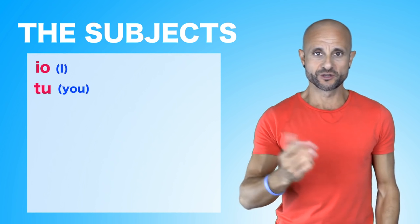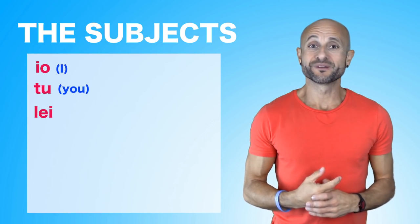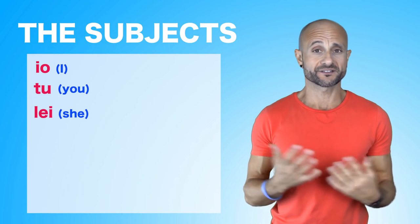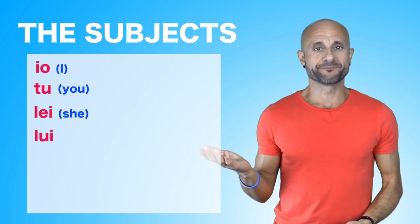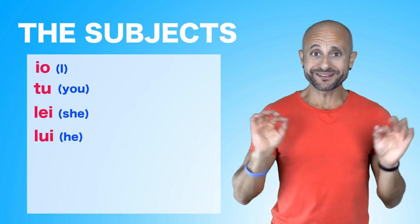Tu, you, single person I'm talking to. Lei, which means she. It could also mean you if I'm being formal in a certain context. Lui, he. We don't have a word for it, so we'll skip it.